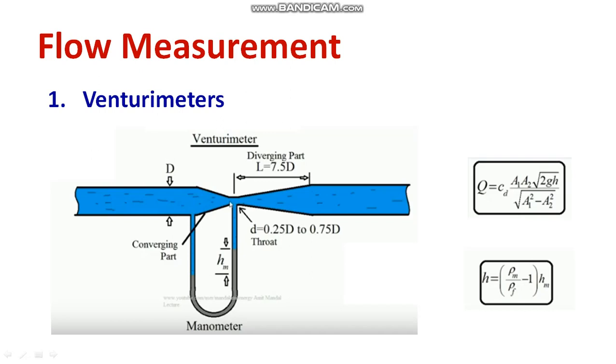The height difference, differential height. This is actually, here manometer is enclosed. Along with the venturi meter, there will be a manometer as well. You can see rho M means density of mercury, rho F means density of fluid, and HM means the differential pressure, differential height.